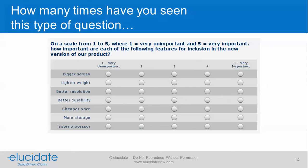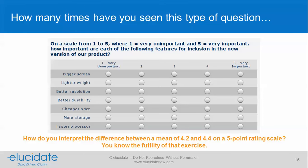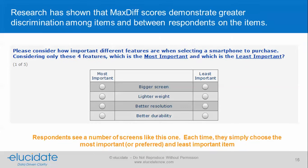So why do we use MaxDiff? We've all seen rating scale questions where there are a number of items and we're trying to gauge the importance of those items. When we get the results back and see a mean of 4.2 or 4.4, or even if we use top two boxes, we're not getting very good discrimination among the items on rating scale questions.